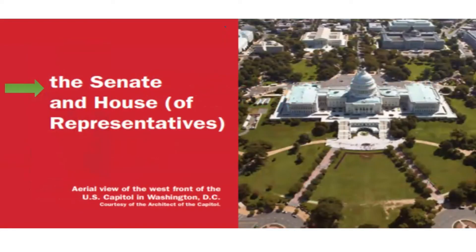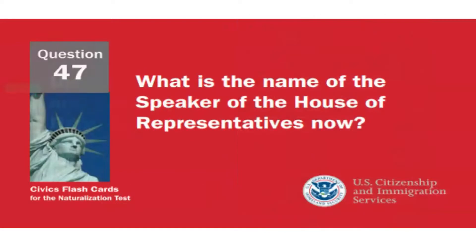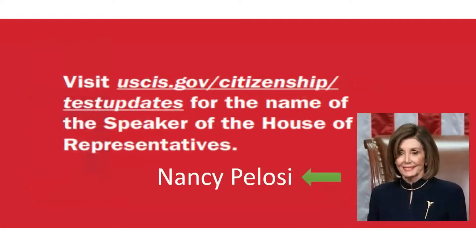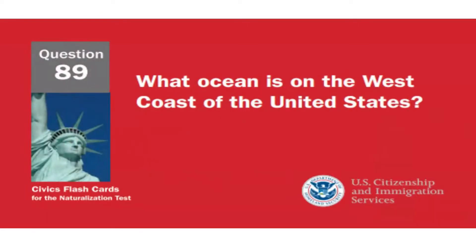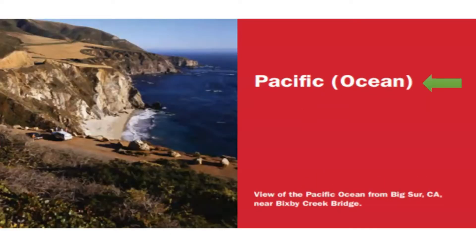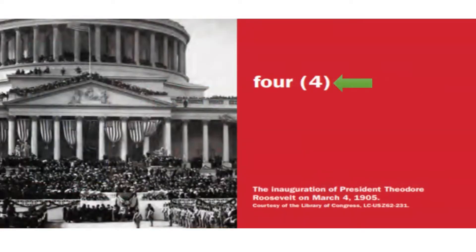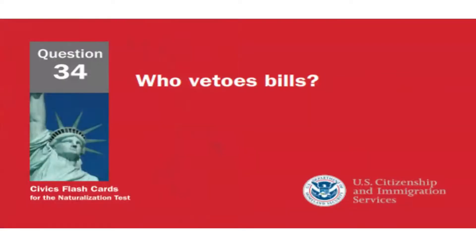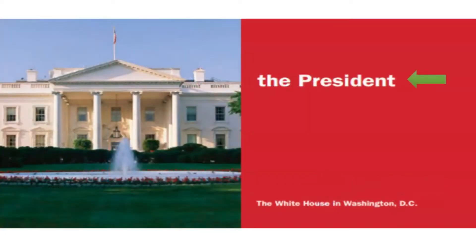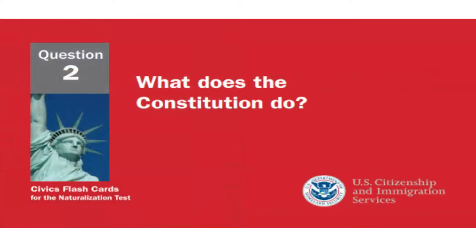What are the two parts of the U.S. Congress? The Senate and the House of Representatives. What is the name of the Speaker of the House of Representatives now? Nancy Pelosi. What ocean is on the west coast of the United States? Pacific Ocean. We elect a president for how many years? Four years.